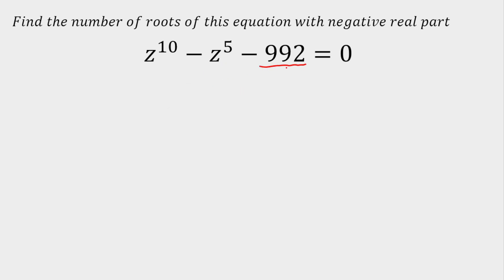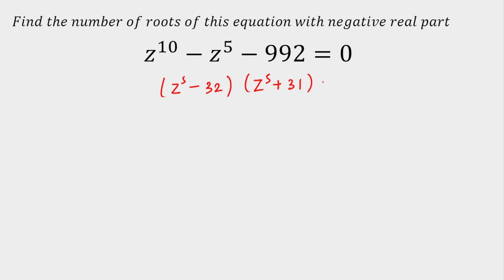Now let's think about the factors. The factors will be close to 30 because 30 times 30 is 900. Their difference is minus 1 and the product is minus 992, with one number negative and one positive. So one factor is z raised to power 5 minus 32, and the other is z raised to power 5 plus 31, because the difference should be minus 1.